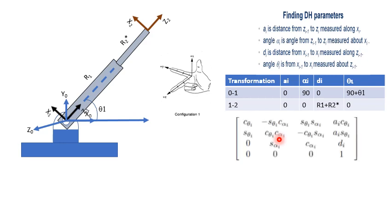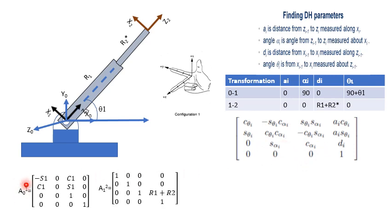Once you have the DH table, then you know the homogeneous transformation matrix is this one. You can put all the values for 0 to 1 and 1 to 2: cos theta i, sine theta i, cos alpha i, sine alpha i, and ai. If you put these values, then you will get A0 to 1 as follows and A1 to 2 as follows. Your final transformation matrix should be the multiplication of A0-1 and A1-2, and this is the final transformation matrix.